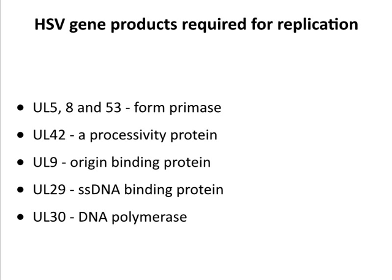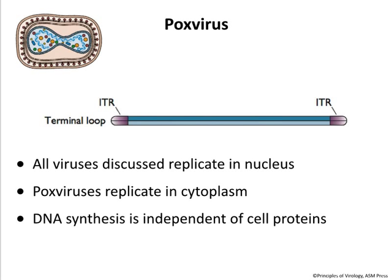Herpesvirus encodes a primase that makes RNA primers and Okazaki fragments, a processivity protein that makes DNA replication continue for long periods, an origin binding protein, a single-stranded DNA binding protein, and its own DNA polymerase. So this virus makes a lot of the components for replicating its DNA.